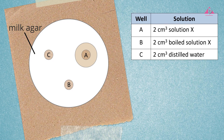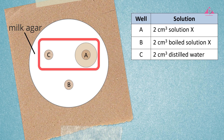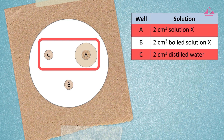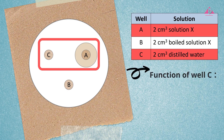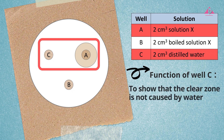Well A is used to investigate the action of Solution X on milk proteins. What are the functions of the remaining wells? Well A contains 2 cm³ of Solution X, while well C contains 2 cm³ of distilled water. By comparing the results, we can deduce that the function of well C is to rule out the possibility of water causing the formation of the clear zone. So the formation of the clear zone is probably due to the action of Solution X.